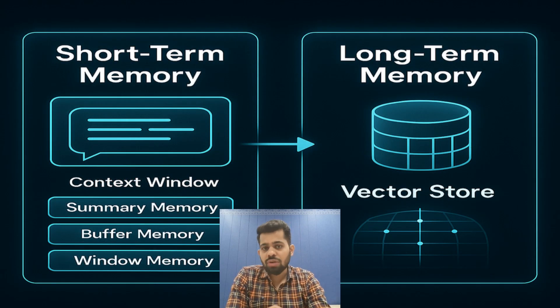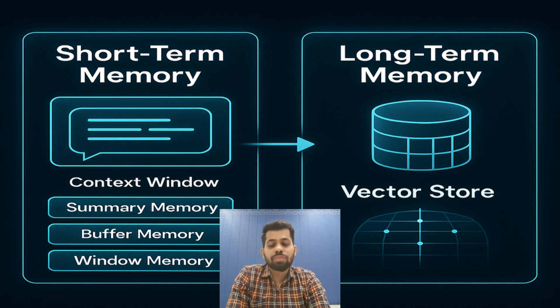Memory can be short-term or long-term. In short-term, you find effective ways to store the conversation in the context window using methods like summary memory, buffer memory, window memory, etc. While in long-term, you use databases like vector stores to store for longer duration.